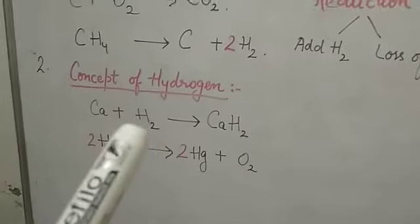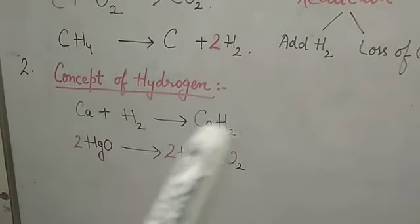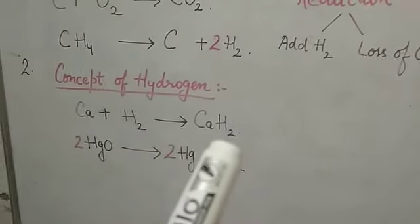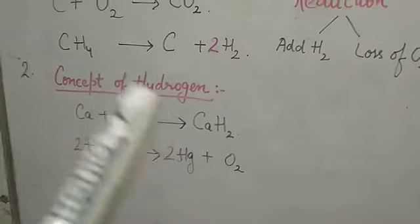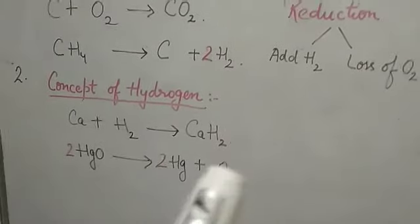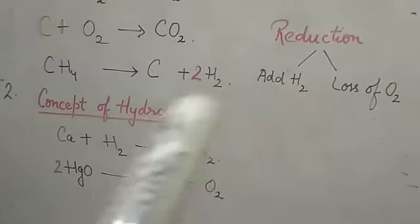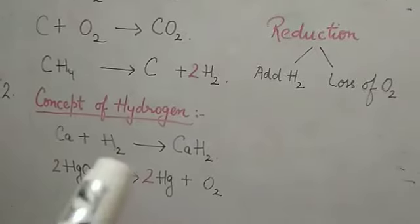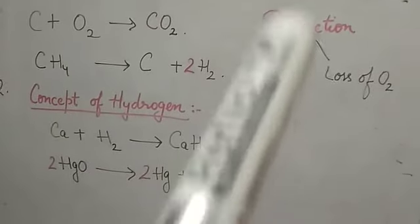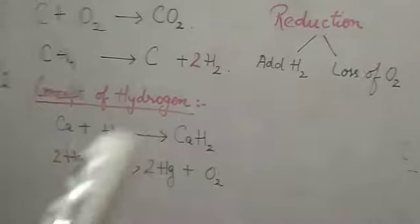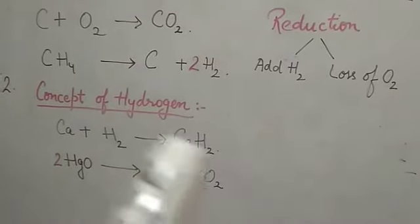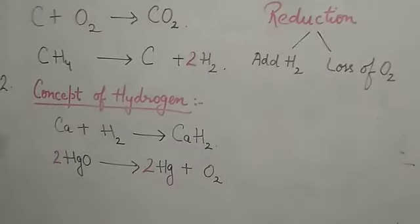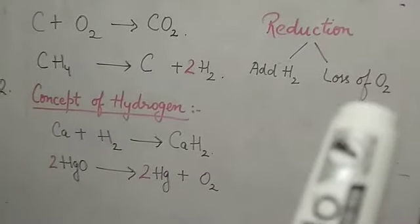Now the concept of hydrogen. Here you can see: calcium plus hydrogen becomes calcium hydride, CaH₂. Here there is an addition of hydrogen, so it becomes reduced — addition of hydrogen means reduction. So this is a reduction reaction. The next example shows loss of oxygen.